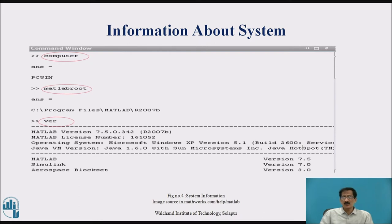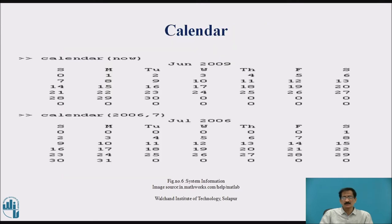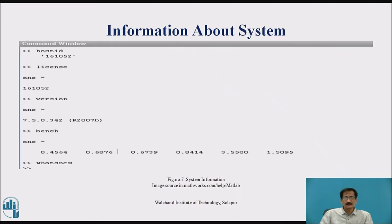This is information about the system — computer, then PC win. This is the date, clock, and calendar. This is again the calendar, June 2009. Information about the system includes license, versions, and bench.